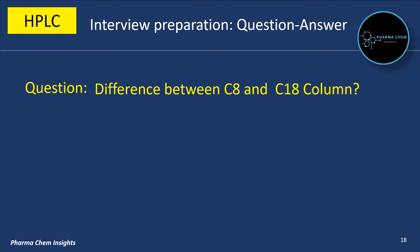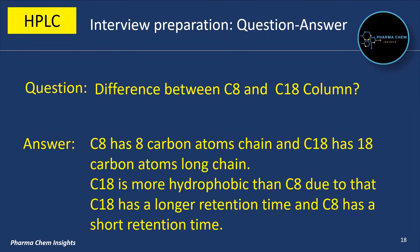What is the difference between C8 and C18 columns? C8 has an 8-carbon atom chain and C18 has an 18-carbon atom long chain. C18 is more hydrophobic than C8. Due to that, C18 has a longer retention time and C8 has a shorter retention time.